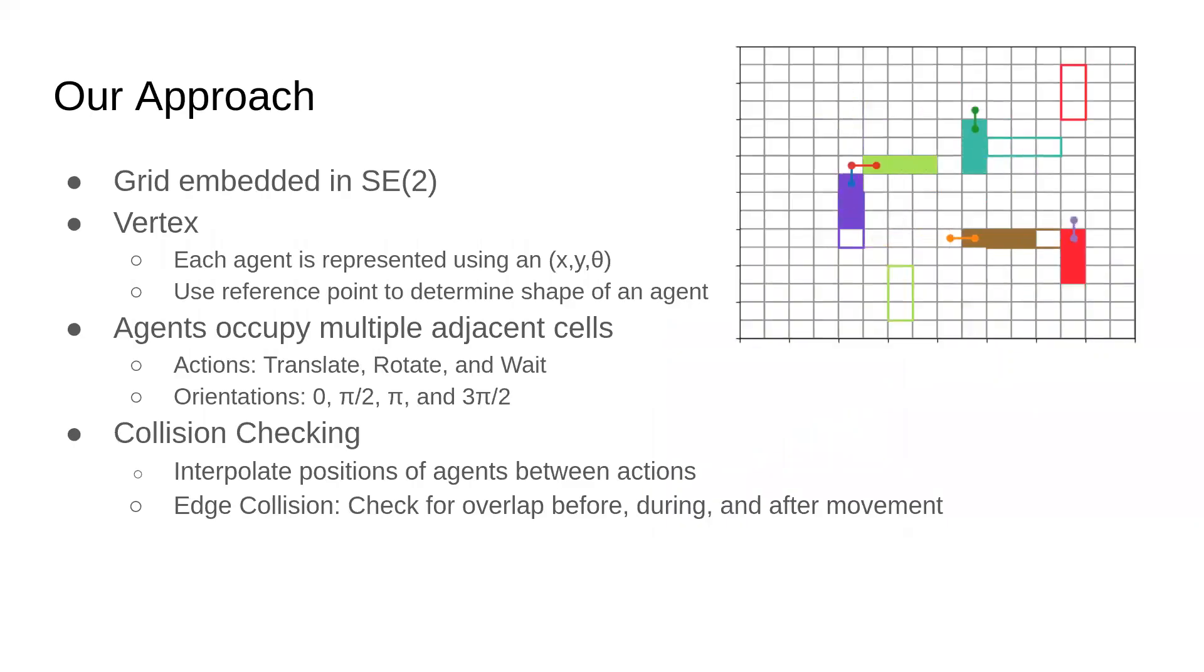For our approach, we plan on a grid that's embedded in SE2. Our graph representation consists of a set of vertices and edges, or edges serve as connections between vertices. For our approach, we represent our agents using x, y, theta. This reference point is used to determine the shape of an agent.